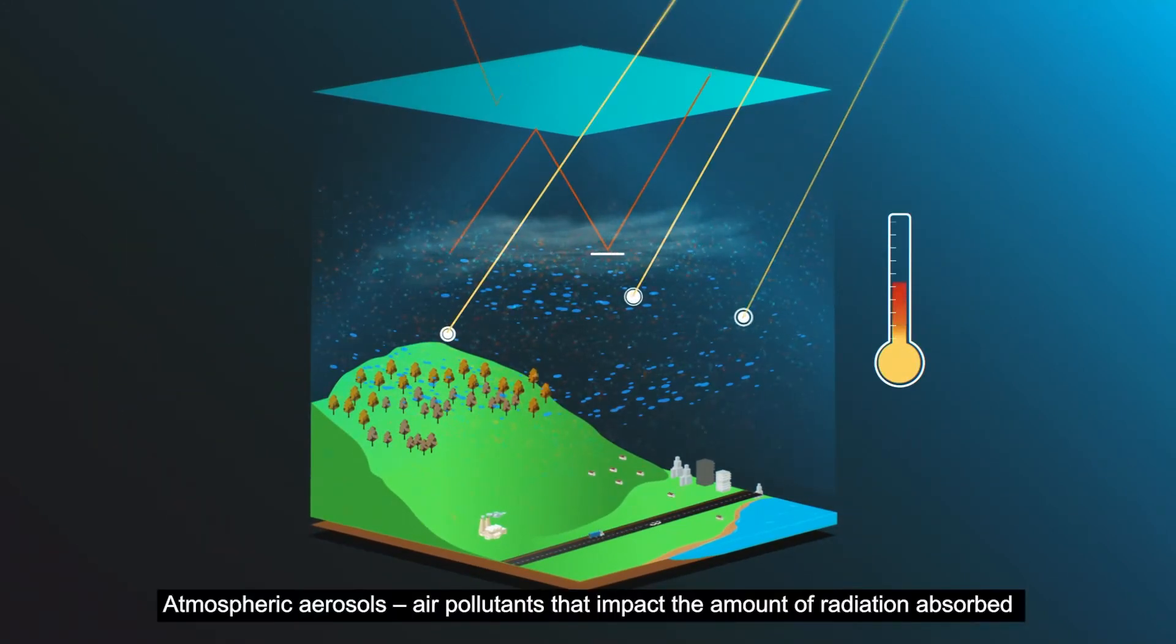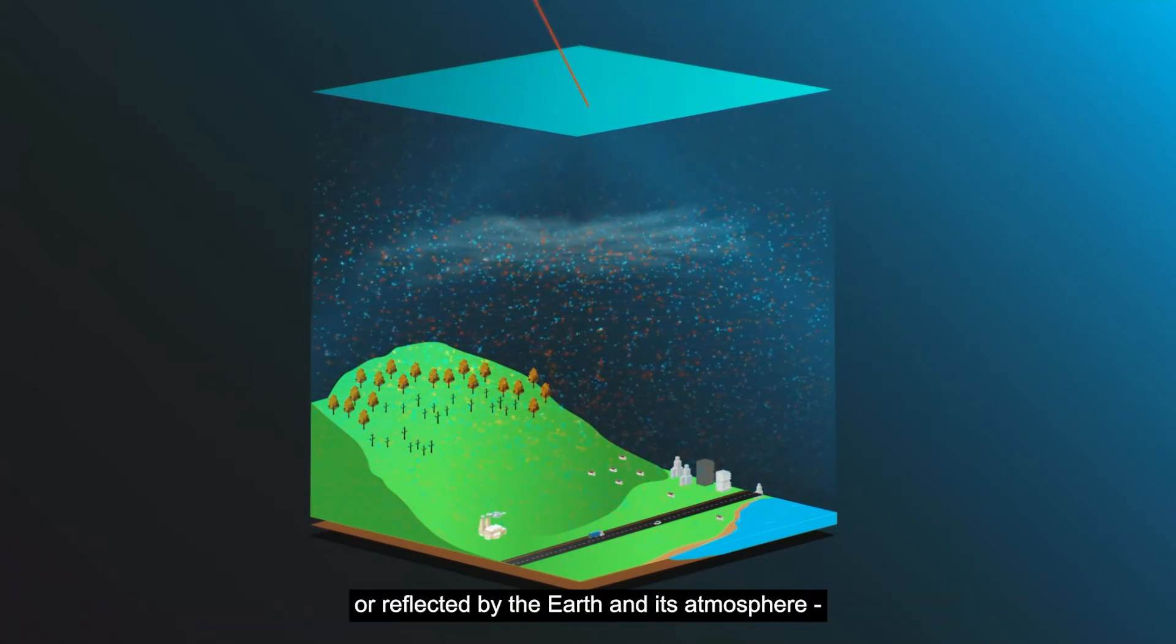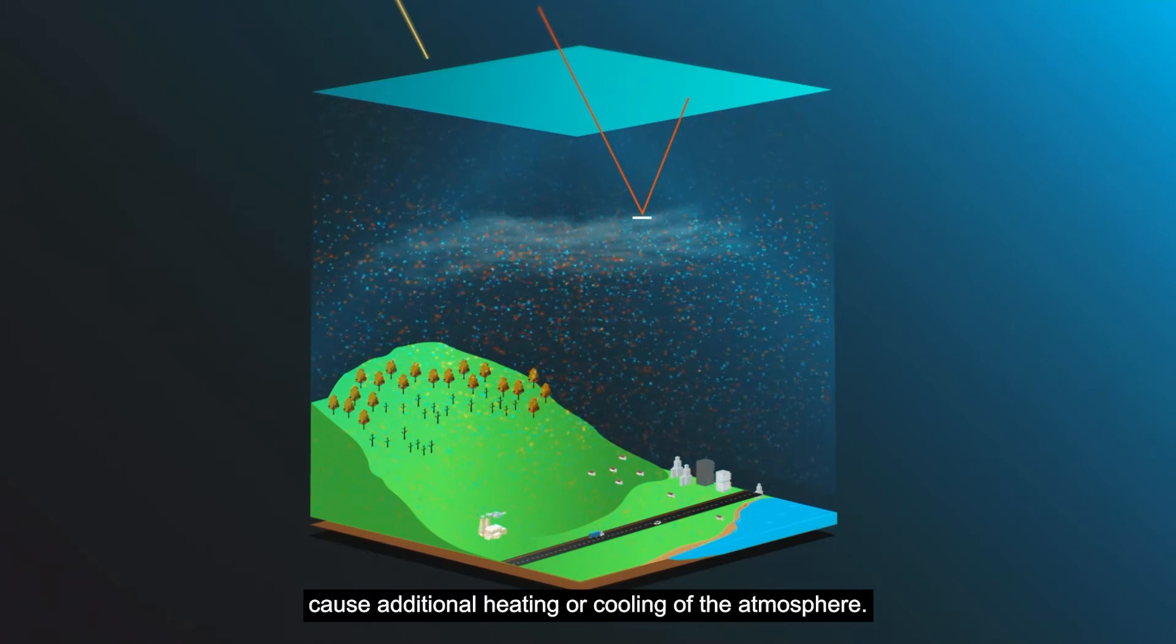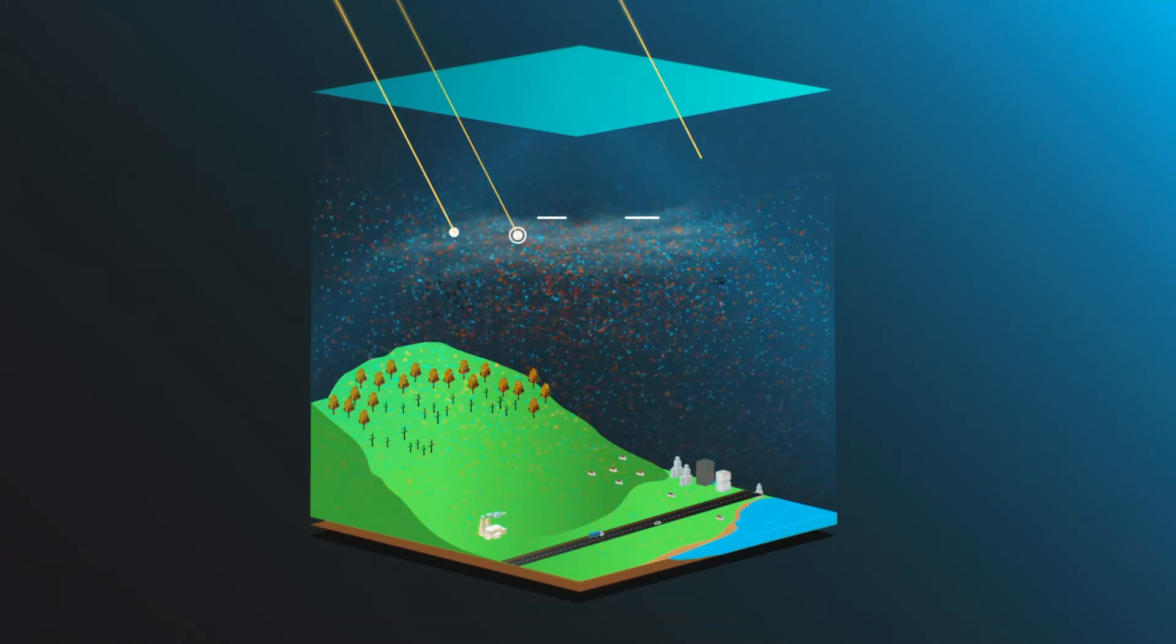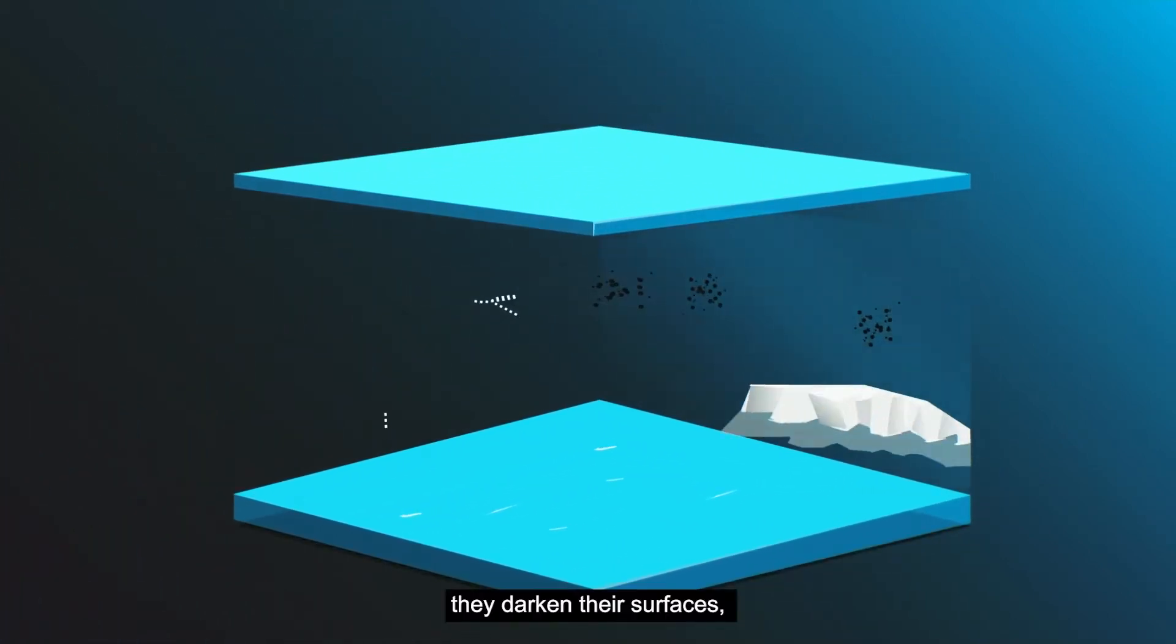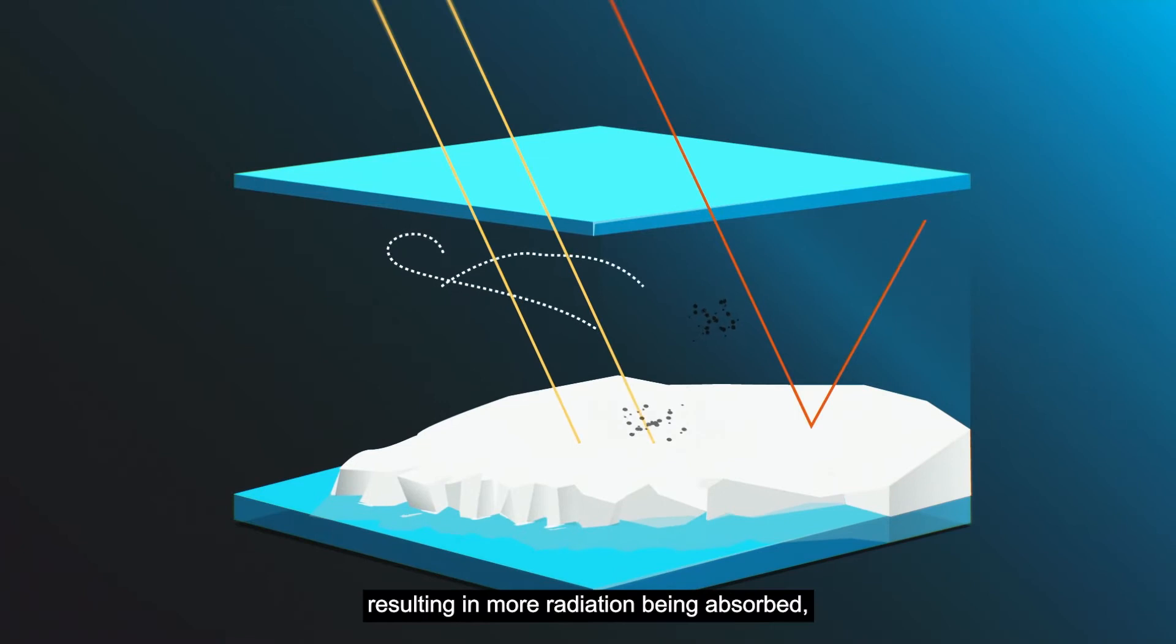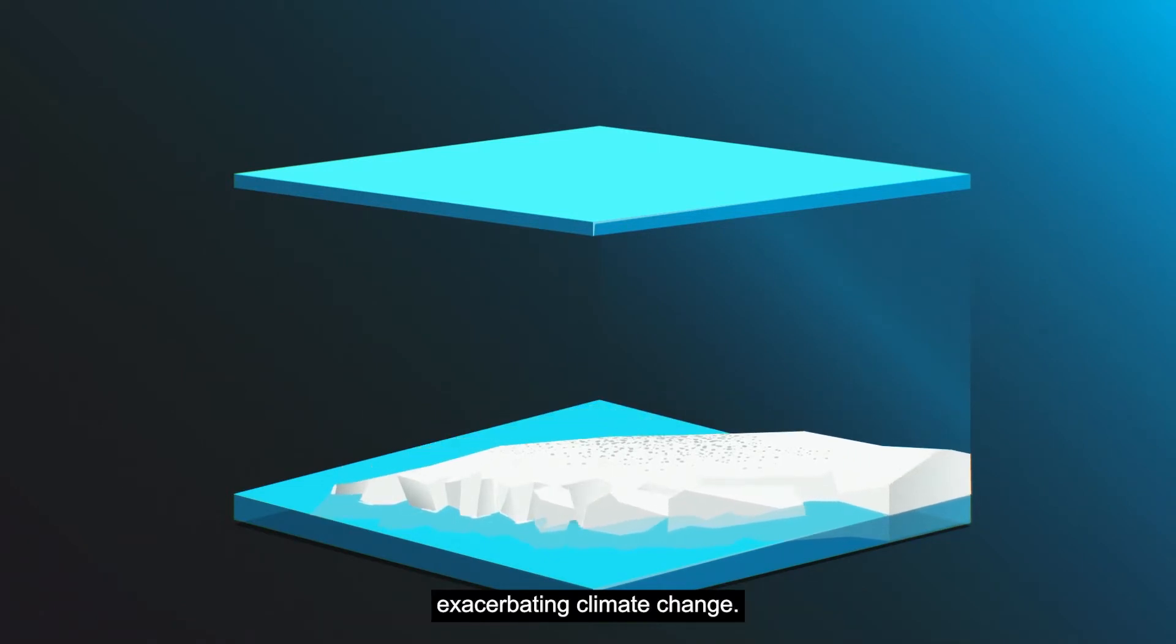Atmospheric aerosols, air pollutants that impact the amount of radiation absorbed or reflected by the Earth and its atmosphere, cause additional heating or cooling of the atmosphere. When these aerosols are deposited on snow and ice, they darken their surfaces, resulting in more radiation being absorbed, leading to warmer temperatures and melting snow, exacerbating climate change.